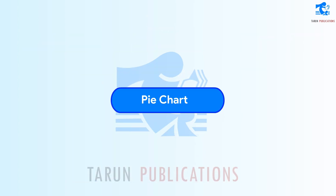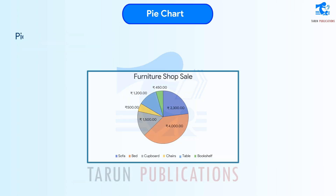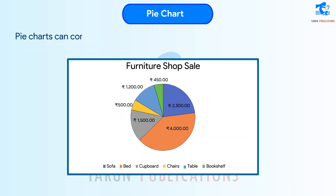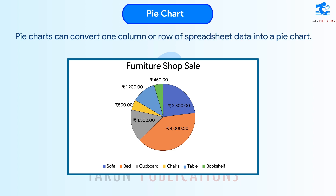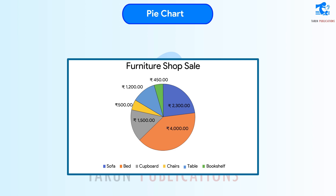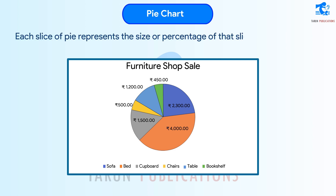Pie Chart: Pie charts can convert one column or row of spreadsheet data into a pie chart. Each slice of pie represents the size or percentage of that slice relative to the whole pie.